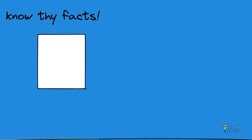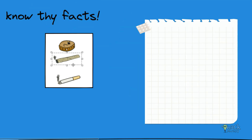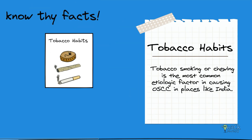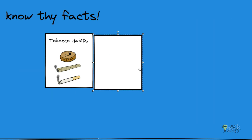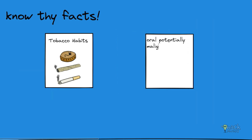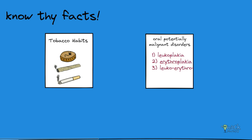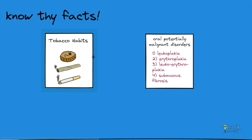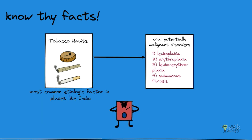Tobacco smoking or chewing is the most common etiologic factor in causing squamous cell carcinoma in places like India. Most commonly, tobacco habits lead to causing oral potentially malignant disorders like leukoplakia, erythroplakia, leukoerythroplakia, and submucous fibrosis. Though not all of them transform, they have the potential to become malignant. Most cases of oral squamous cell carcinoma are preceded by dysplastic, potentially malignant disorders.